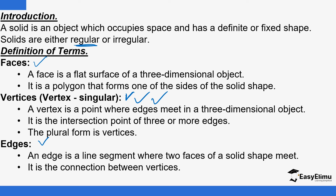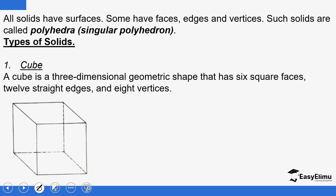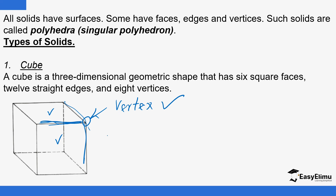An edge is a line segment where two faces meet. You can see we have a face here and another face — where they meet, this is what we call an edge. And where edges meet at a point, we call it a vertex. If there are many, we call them vertices. We can count them: one, two, three, four, five, six, seven, eight — eight vertices. In an exam you may be asked to state the number of vertices a cube has, so it's just a matter of counting them.